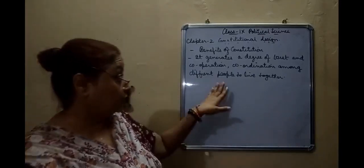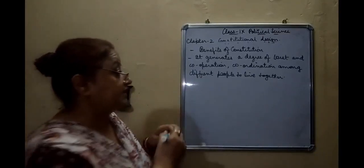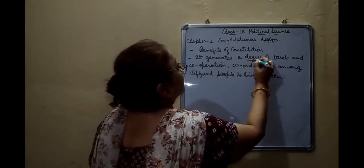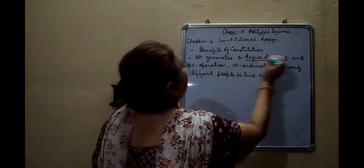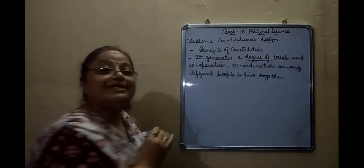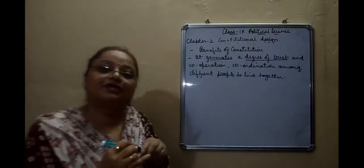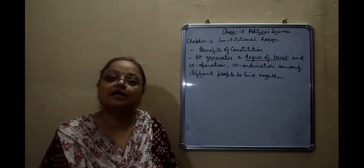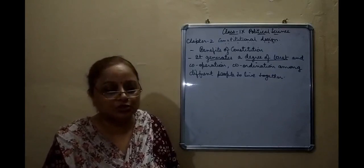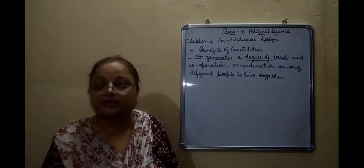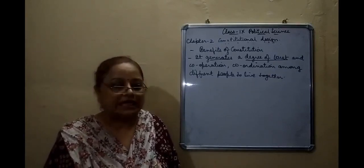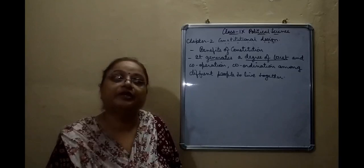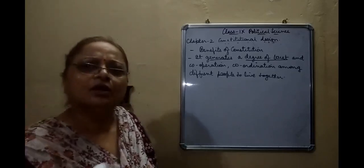Secondly, it specifies how the government will be constituted. Government kaise banegi? Who will be the representatives? In democracy there are no rulers — there are only representatives, whom the common people select or elect.